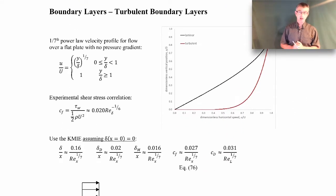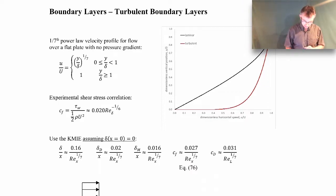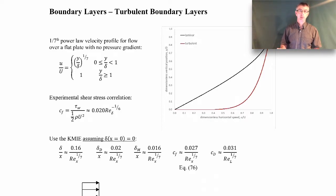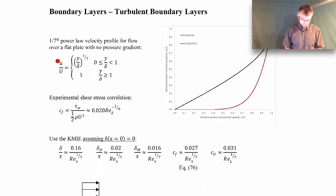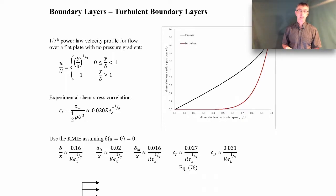The first step in the Karman momentum integral equation approach is to write an expression for the velocity profile based on experimental data. Here's the horizontal velocity profile made dimensionless by the free stream velocity. This expression is found from experimental data and is called a power law velocity profile because it's the dimensionless y position raised to a power. Here we have y made dimensionless by the 99% boundary layer thickness, so it follows this power law behavior within the boundary layer, and outside it's just the outer flow velocity. This comes from experimental data specifically for turbulent flow over a flat plate with no pressure gradient.